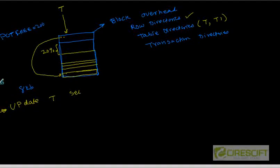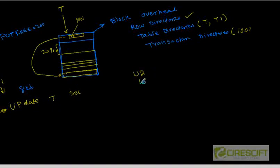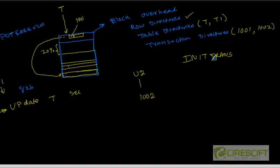Let's say the transaction ID for user 1 giving this command from a SQL prompt is 1001. The transaction directory is basically kind of an array where I am going to store 1001 in the first slot. The parameter INIT_TRANS tells me how many slots are available to start with. If INIT_TRANS is 2, that means my transaction directory array can contain, to begin with, 2 elements.